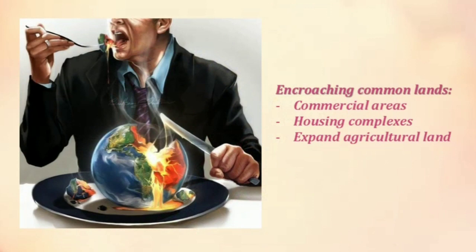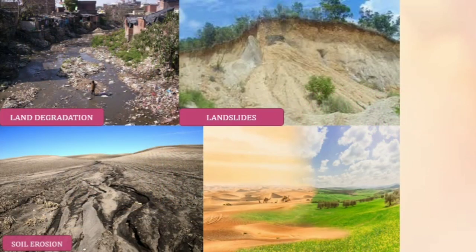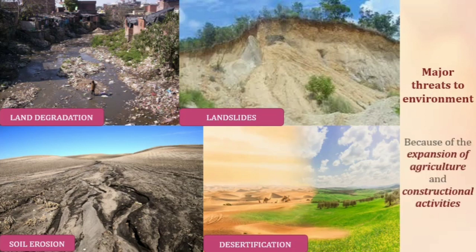People started encroaching the common lands to build up commercial areas and housing complexes in the urban areas, and to expand the agricultural land in the rural areas. Today, the vast changes in the land use pattern also reflect the cultural changes in our society. Land degradation, landslides, soil erosion and desertification are the major threats to the environment because of the expansion of agriculture and constructional activities.